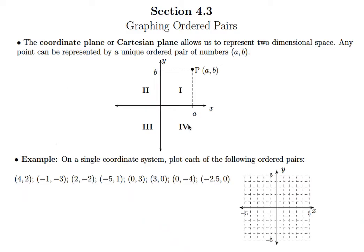In this lesson, we're going to learn how to graph in two-dimensional space. What we're going to do is take a point and show its location in what we call the coordinate plane or the Cartesian plane. If you're given what we call an ordered pair — just a set of two numbers put in parentheses, (A, B) — this is enough information to locate any point in two dimensions.